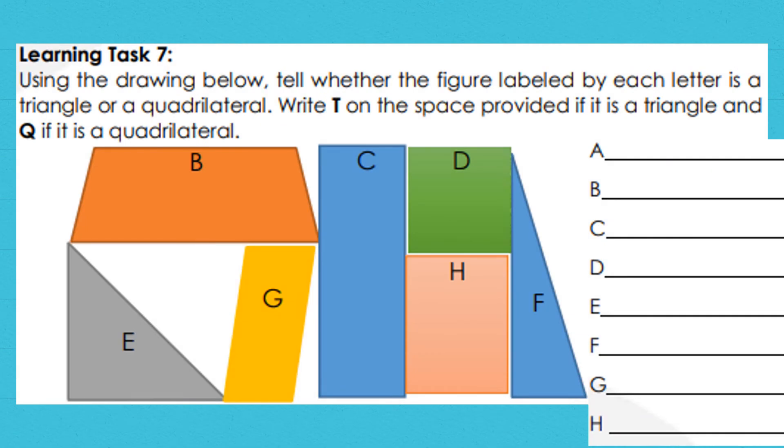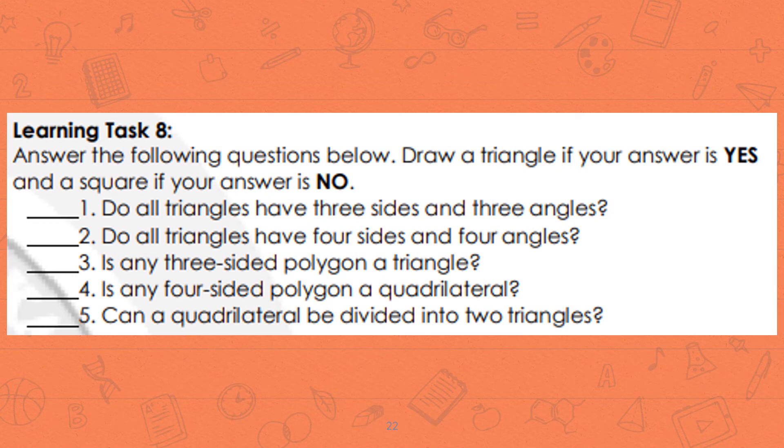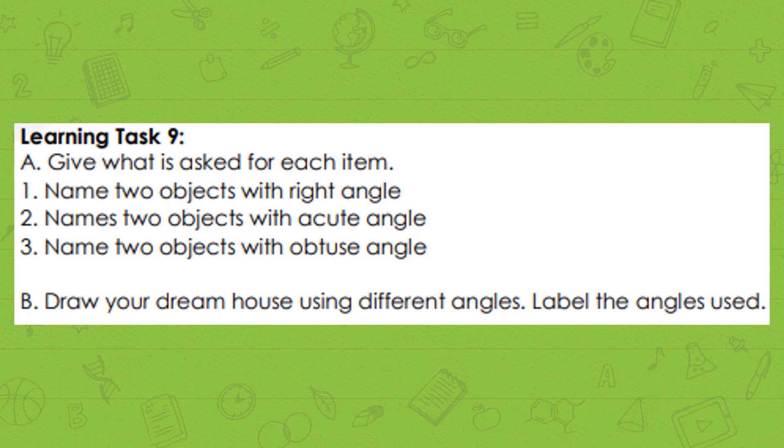Learning task 7: Using the drawing below, tell whether the figure labeled by each letter is a triangle or a quadrilateral. Write T if it is a triangle and Q if it is a quadrilateral. Learning task 8: Answer the following questions. Draw a triangle if your answer is yes, and a square if your answer is no. Learning task 9: Draw your dream house using different angles. Label the angles used.